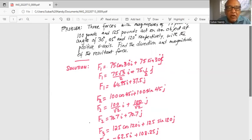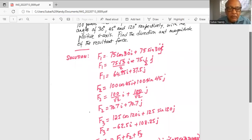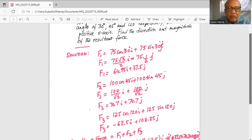Now F3 has a magnitude of 125 and it makes an angle of 120 degree with the positive x-axis. So F3 can be written as 125 cosine 120i plus 125 sine 120j.